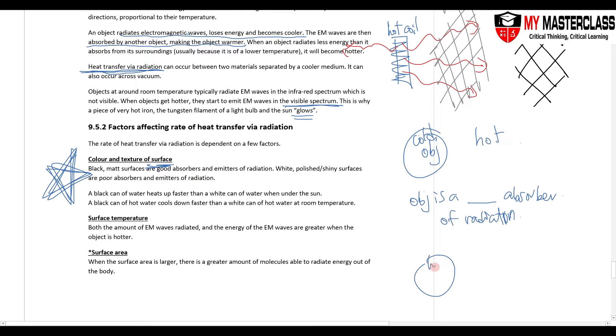If on the contrary, this is a hot object and this is a cold surrounding, then you will say that object is an emitter of radiation. Then whether is it a good one or is it a poor one? If this is a black cold object, then it is a good absorber because black is good at absorbing and good at emitting. How about if this is a white one? Then the object is a poor emitter of radiation. If it doesn't emit a lot of radiation, this remains hot.